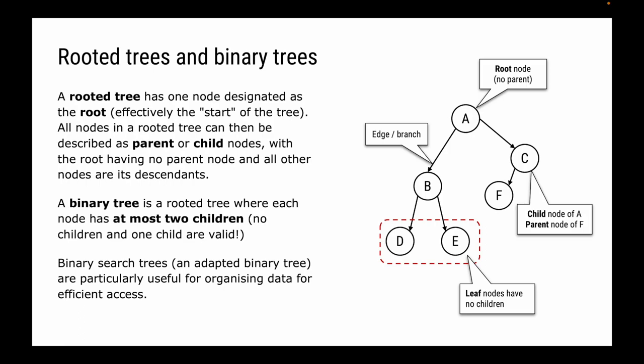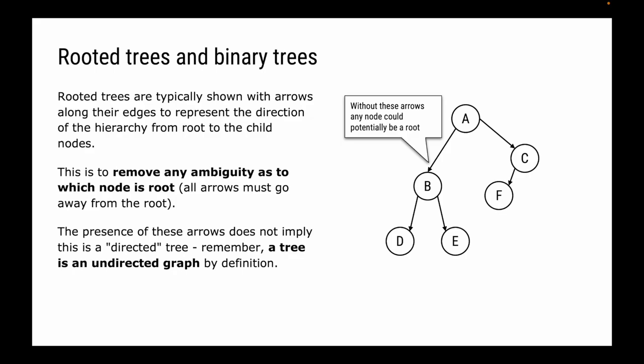Binary search trees are particularly useful for organising data for efficient access. When we display rooted trees, we always show them with arrows along their edges, representing the direction of hierarchy from root to child. This removes ambiguity as to which node is root — it's easy to see A is the root because arrows point away from A but no arrow points toward A. Without arrows, we could rotate the tree and any node could be the root. Despite the presence of arrows in diagrams, the tree is still an undirected graph.